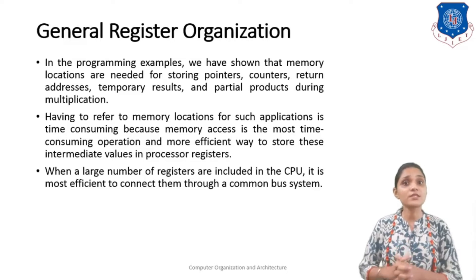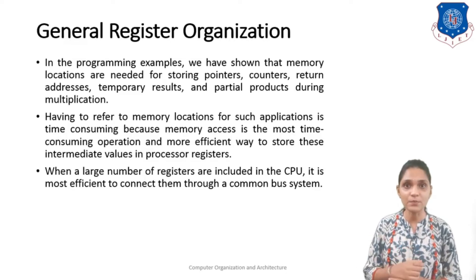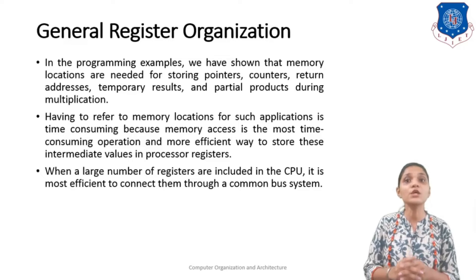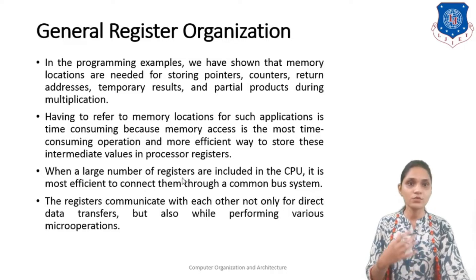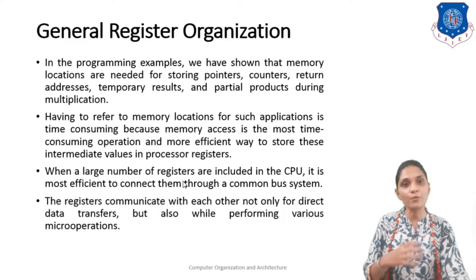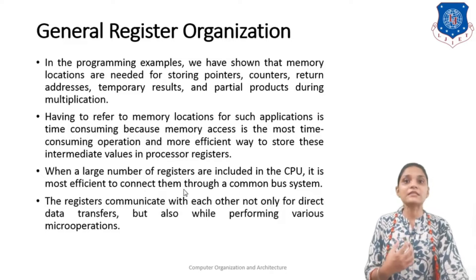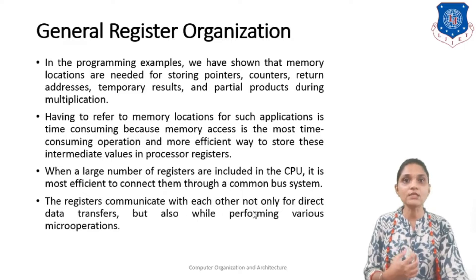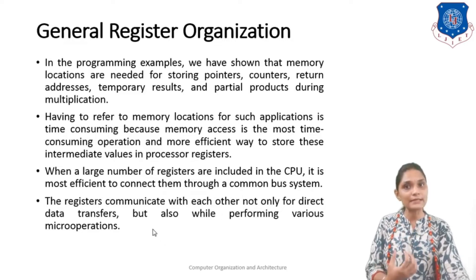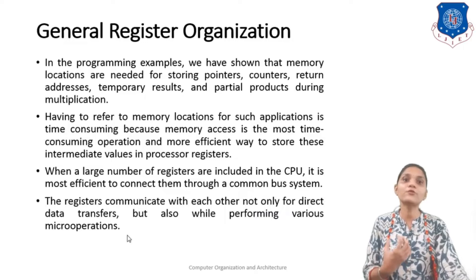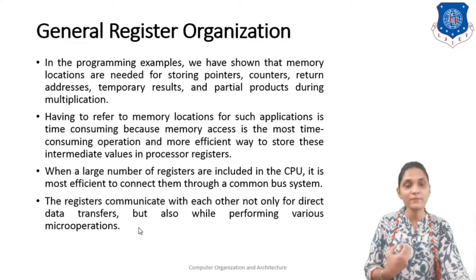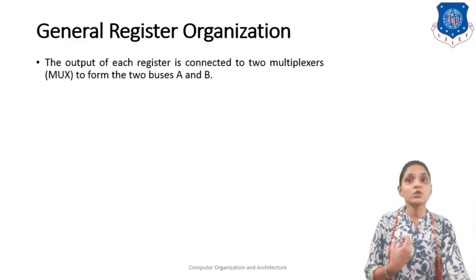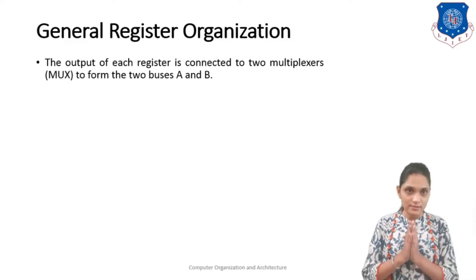When a large number of registers are included in the CPU, it is most efficient to connect them through a common bus system. If you have connected them using a common bus system, your operation will be faster. The registers communicate with each other not only for direct data transfer but also by performing various micro-operations like addition, subtraction, and so on.